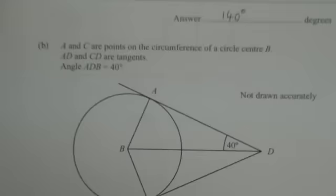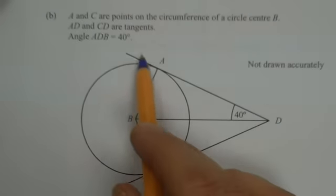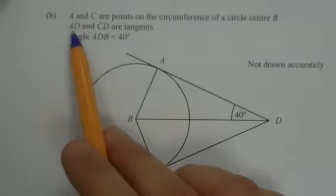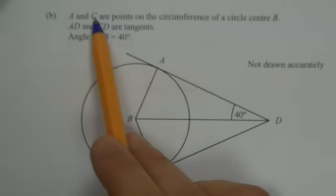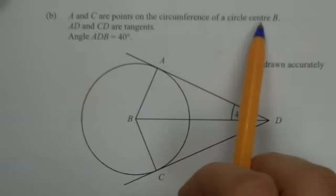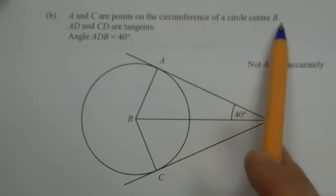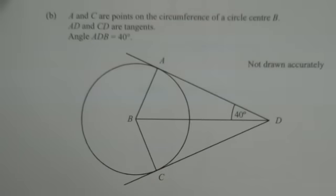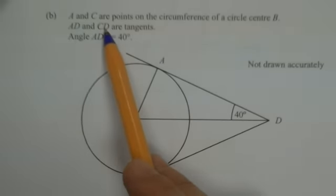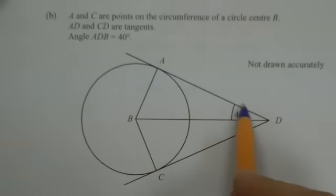Now moving on to part B. I've got tangents drawn to a circle. In the question it says A and C are points on the circumference of a circle, centre B. So there's A, there's C, and there's the centre of the circle there. Now usually the centre is denoted with O for origin. If they put O there, then you assume that it is the centre. If they're telling you the centre is something else, well then that's okay because that's where it is. It says AD and CD are tangents. So this line here and this line here are tangents to the circle.